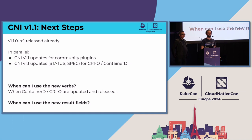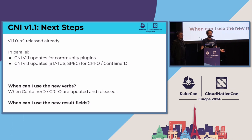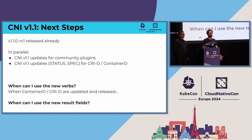The next steps for CNI 1.1: we have an RC1 that's been cut. CNI is a protocol and there are two sides — a client and a provider. The community plugins provided by the CNI project, like Bridge and Mac VLAN, have a PR filed and we should have 1.1 support merged shortly. The new verbs also need to be implemented by the runtime. So CRI-O, containerd, multus, and mesos also need to be updated and take a release in order to expose these verbs.